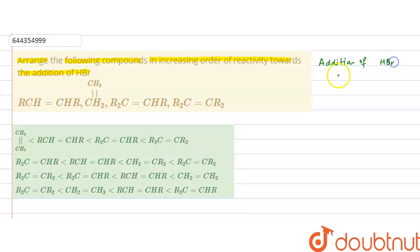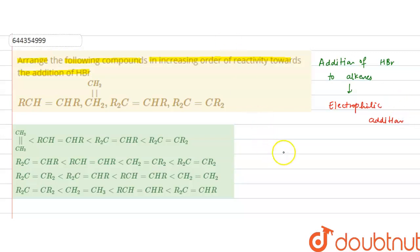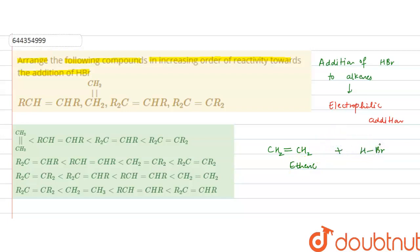Addition of HBr to alkene molecules is an electrophilic addition reaction. If there is an alkene molecule, say CH₂=CH₂, which is ethene — let's consider how HBr adds to this molecule.